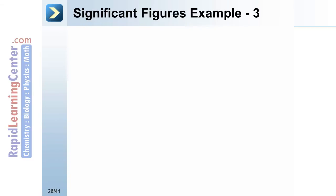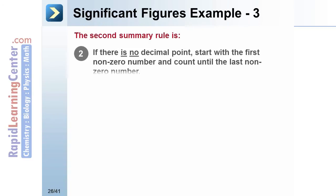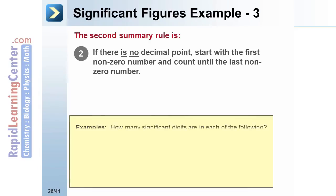The second rule is for when there is no decimal point. Start with the first non-zero number and count until you reach the last non-zero number. This number has no decimal point. Count from the first non-zero number to the last non-zero number. Again, this number has no decimal point. Count from the first non-zero number to the last non-zero number.